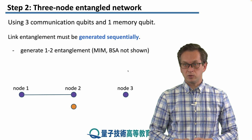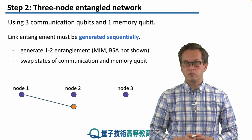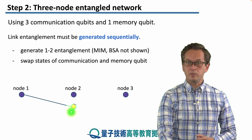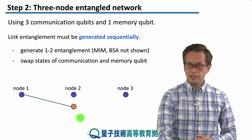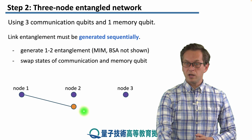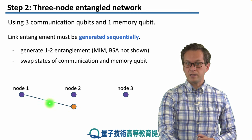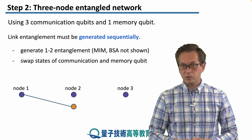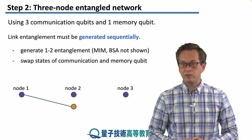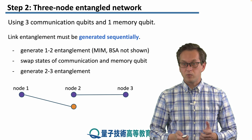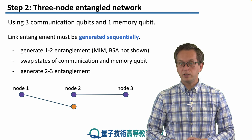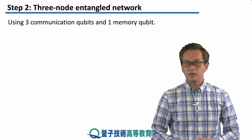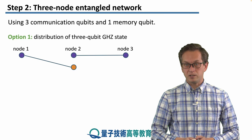Once node one and node two are entangled, node two performs a swap — it swaps the state of the communication qubit with the state of the memory qubit. This keeps the link-level entanglement between nodes one and two, but at node two it's now the memory qubit that's entangled with the communication qubit at node one. The communication qubit at node two is then free to establish link-level entanglement with node three. Once that is done, we have the basic ingredients in place. Now let's follow option number one: establishing the three-qubit GHZ state.